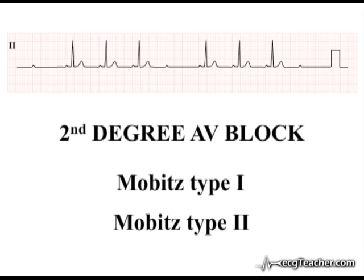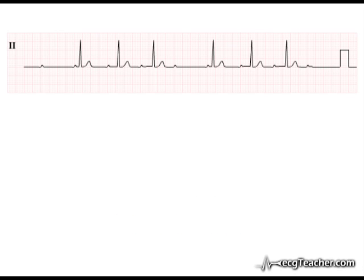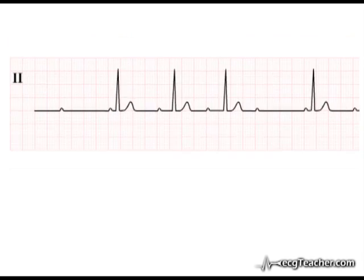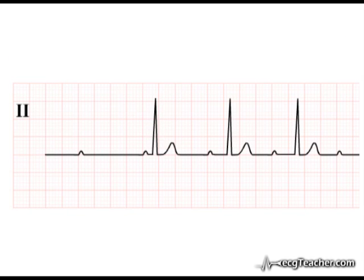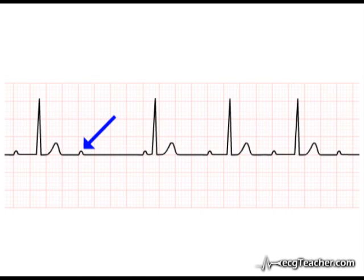The distinction between Mobitz type 1 and type 2 is important as they are associated with very different outcomes for the affected patient. Mobitz type 1 second degree AV block is the so-called Wenckebach phenomenon. Looking at this rhythm strip, the QRS complexes appear to occur in groups, and on closer inspection we find that isolated P-waves are periodically failing to depolarise the ventricles.